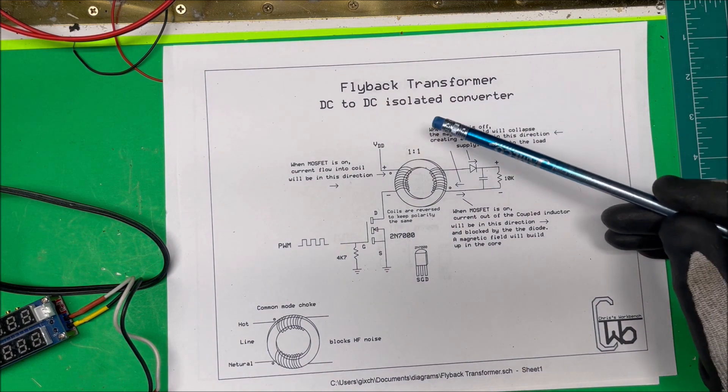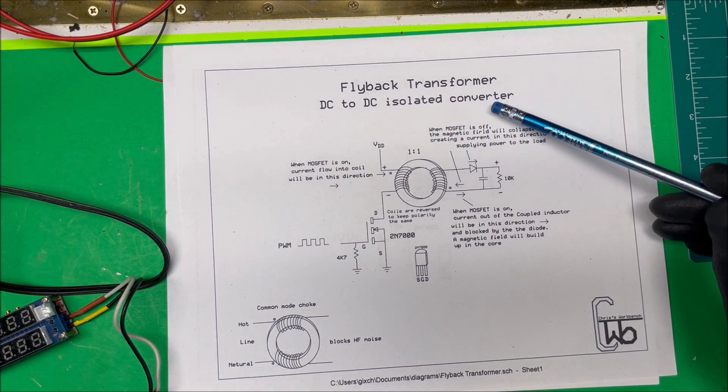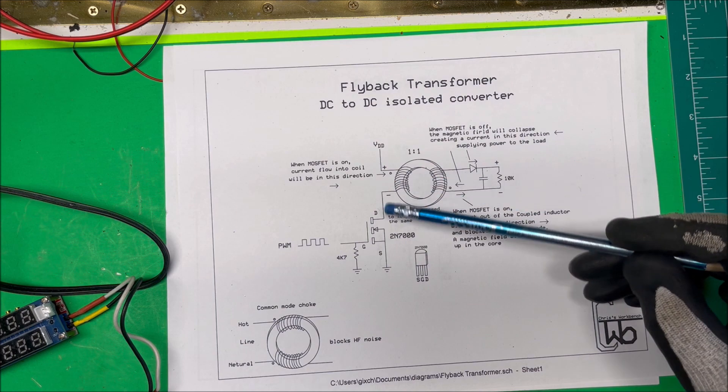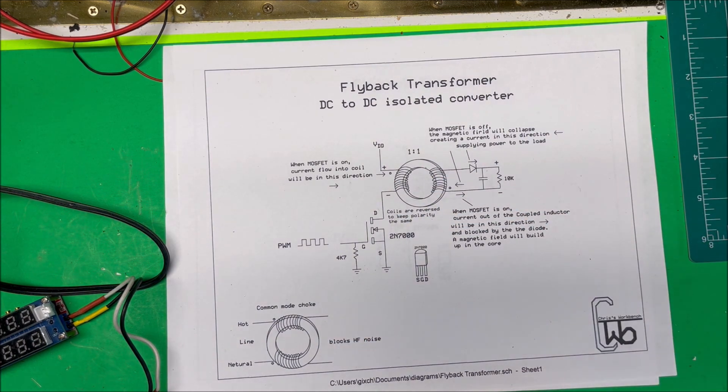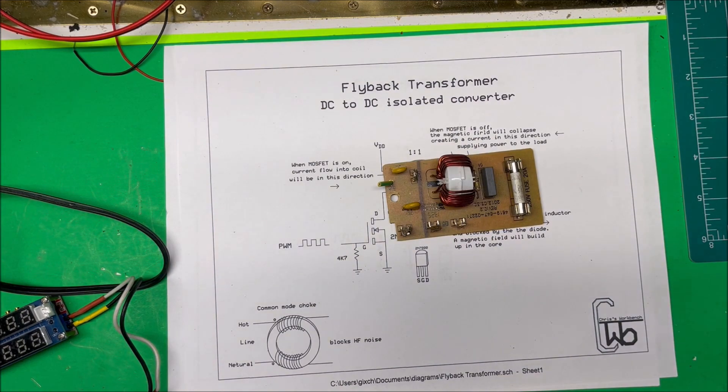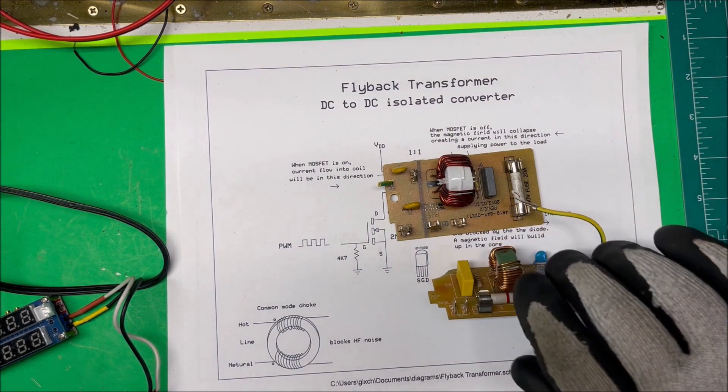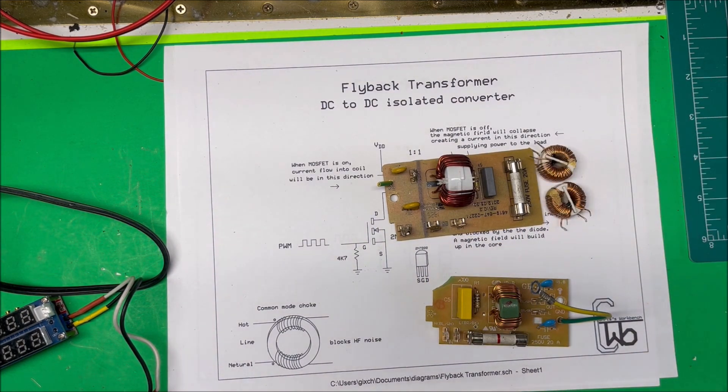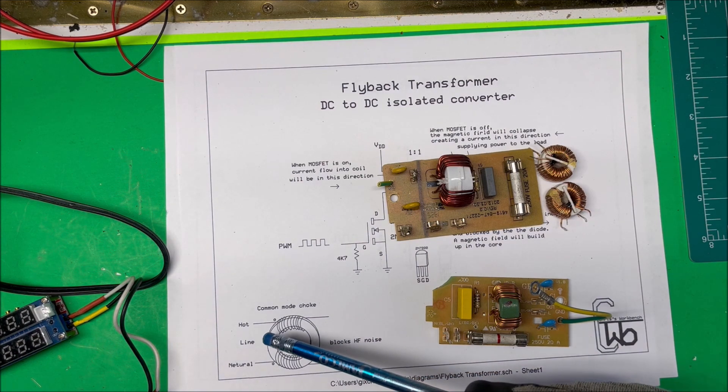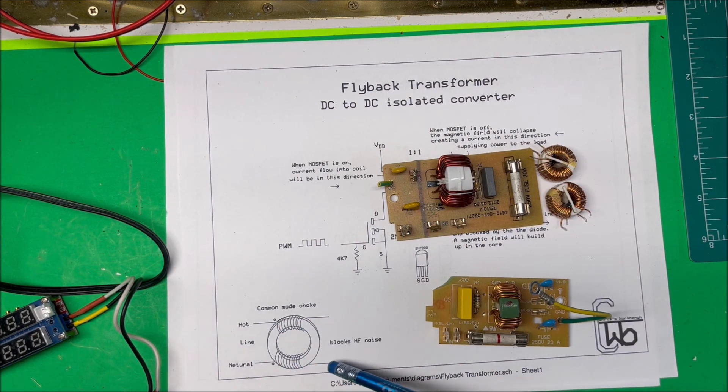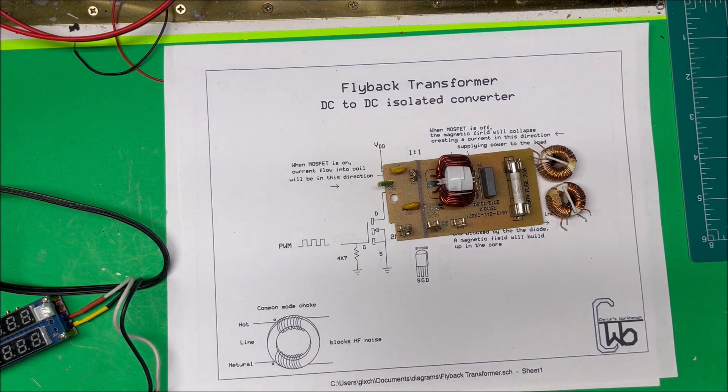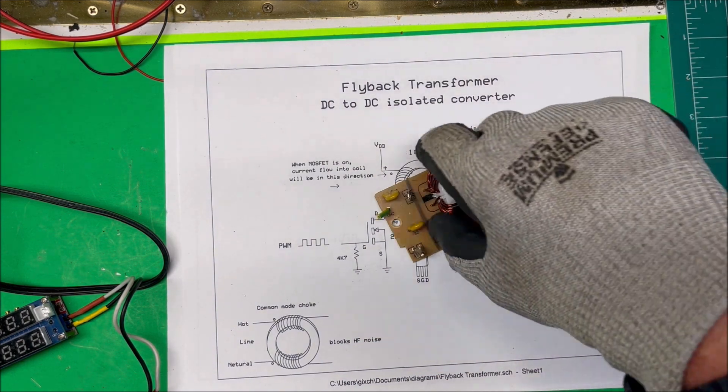Let's talk about a flyback transformer, a DC to DC isolated converter. I made one out of a common mode choke. Common mode chokes are found in filters on power supplies, and here's a couple here. All they do is have the hot and neutral line come in and go straight through. They block high-frequency noise, and maybe we'll talk about that at some point, but I'm just using it as a flyback transformer.